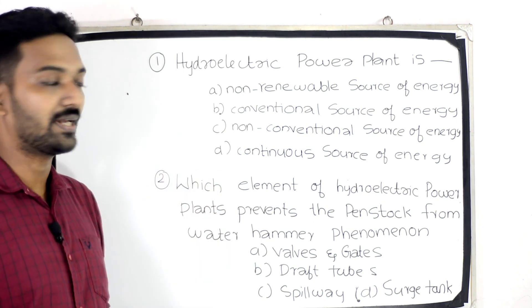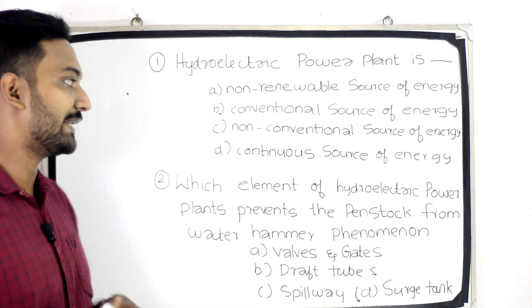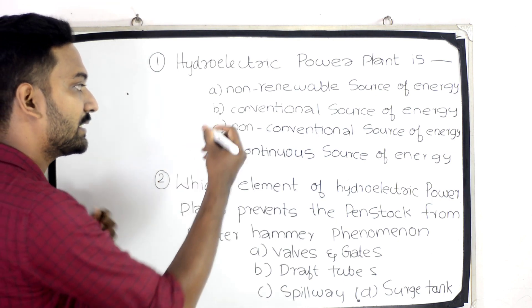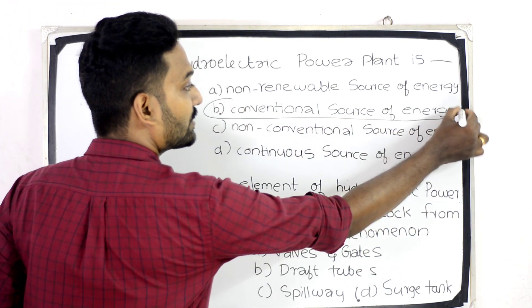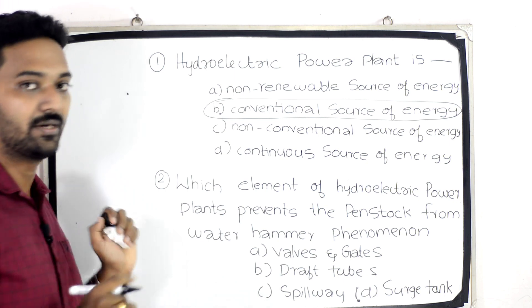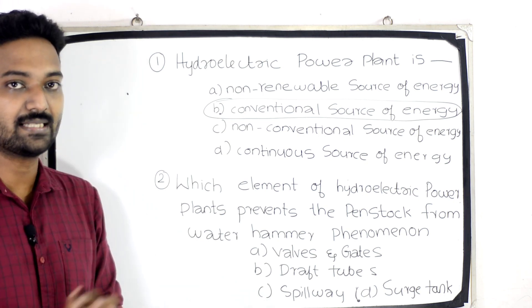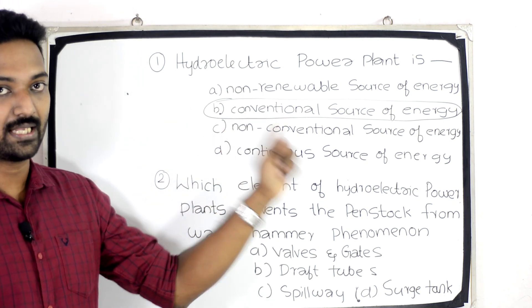Option D: Continuous Source of Energy. Answer: Hydroelectric Power Plant is a Conventional Source of Energy.